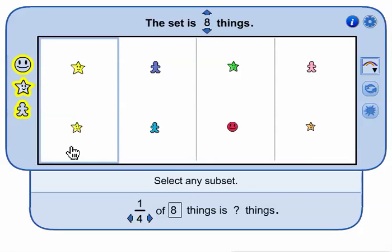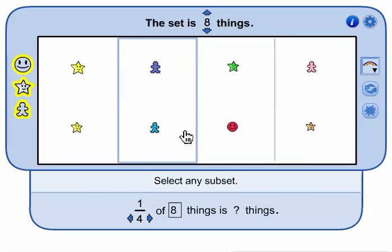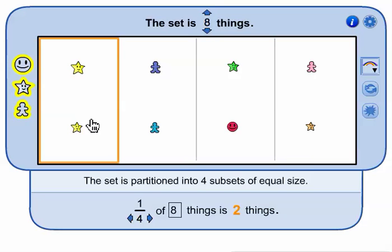Select any subset. This subset has two things, a star and a happy face. Click again to deselect the subset. This subset has two stars. Subsets might have different things but each subset has the same number of things.